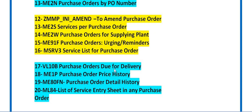VL10B is for purchase orders due for delivery. For example, if you ordered 100 quantity of some materials and the vendor has supplied 90, with 10 quantity still open for delivery, you can get the data of purchase orders due for delivery using transaction code VL10B.